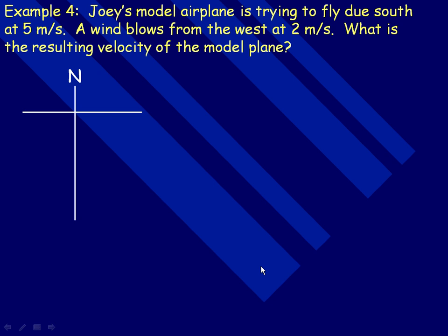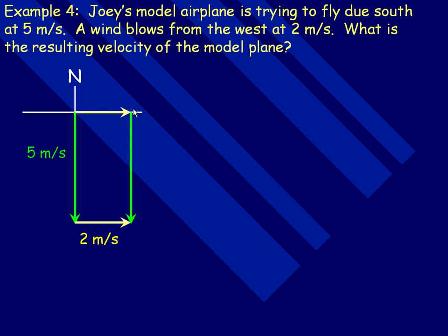In example four, Joey's model airplane is trying to fly due south at five meters per second — we draw that as a vector straight down. A wind blows from the west at two meters per second, directed toward the east. Using the parallelogram law, we complete the rectangle with another wind vector and another five-meters-per-second south vector. The resulting velocity vector goes from where the two tails meet to where the two heads meet.